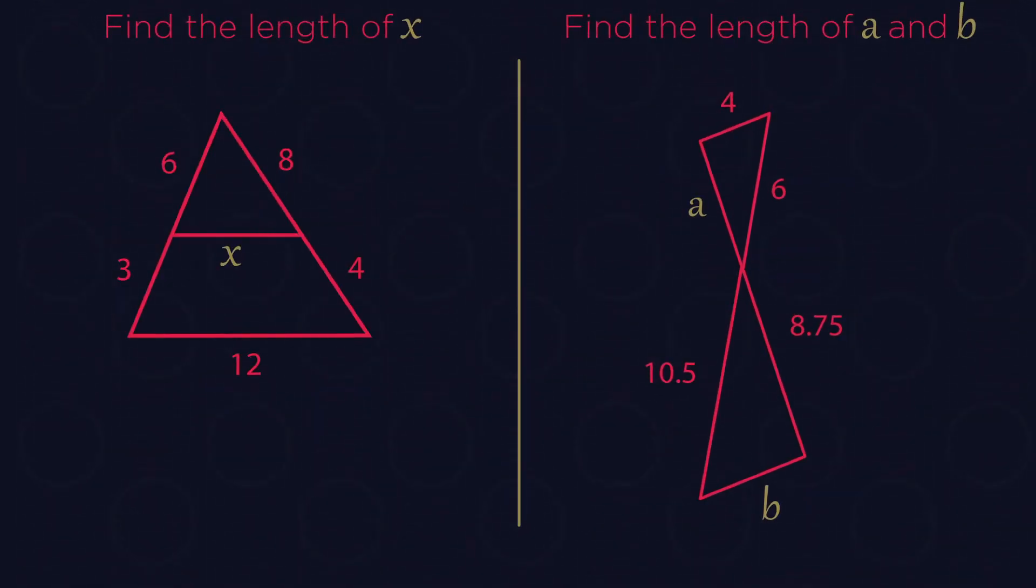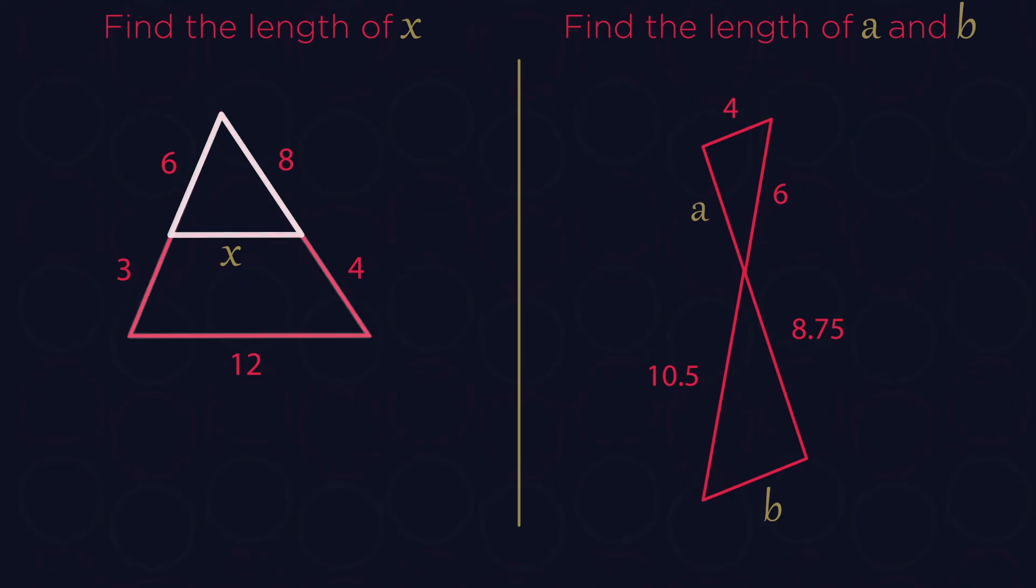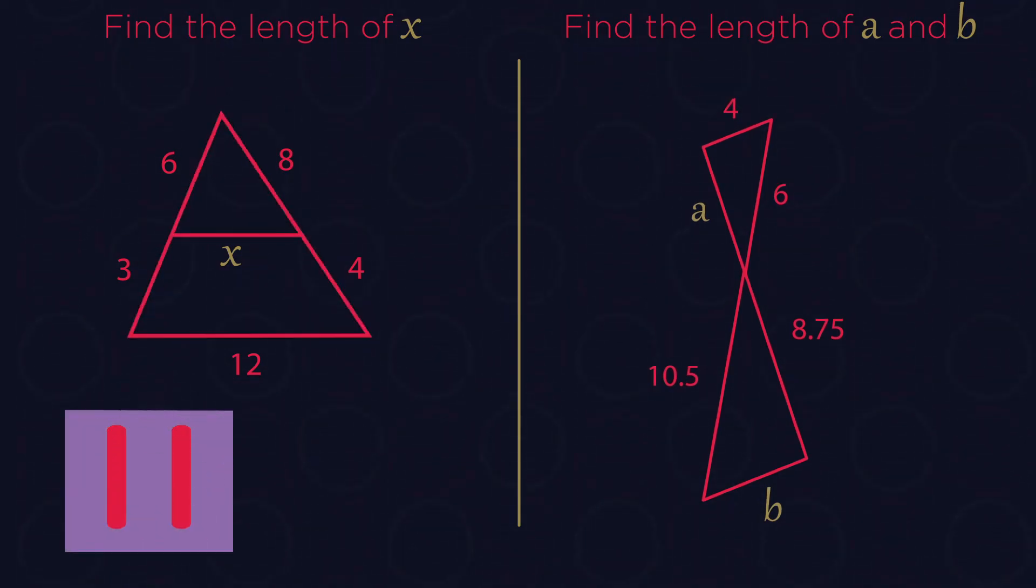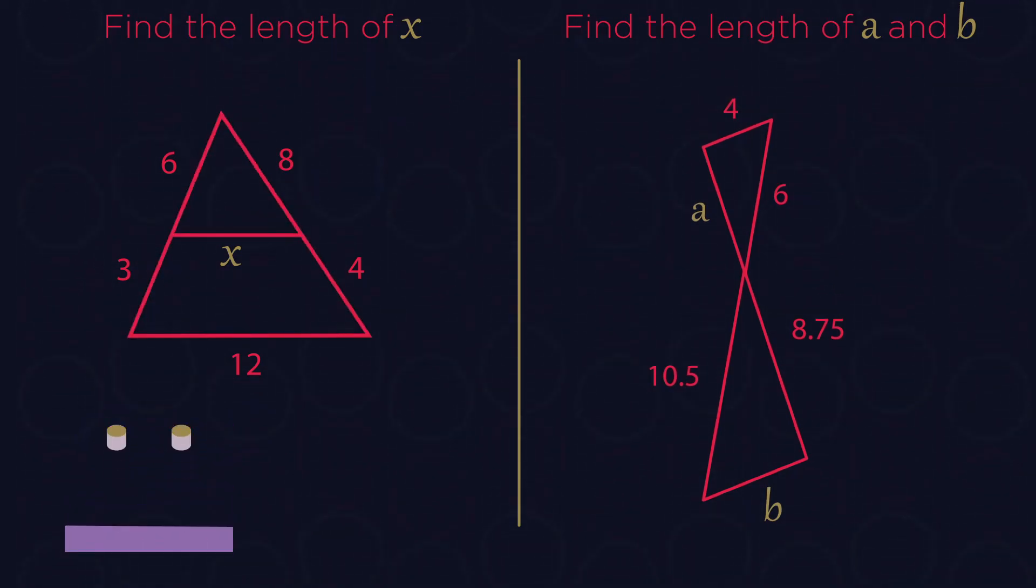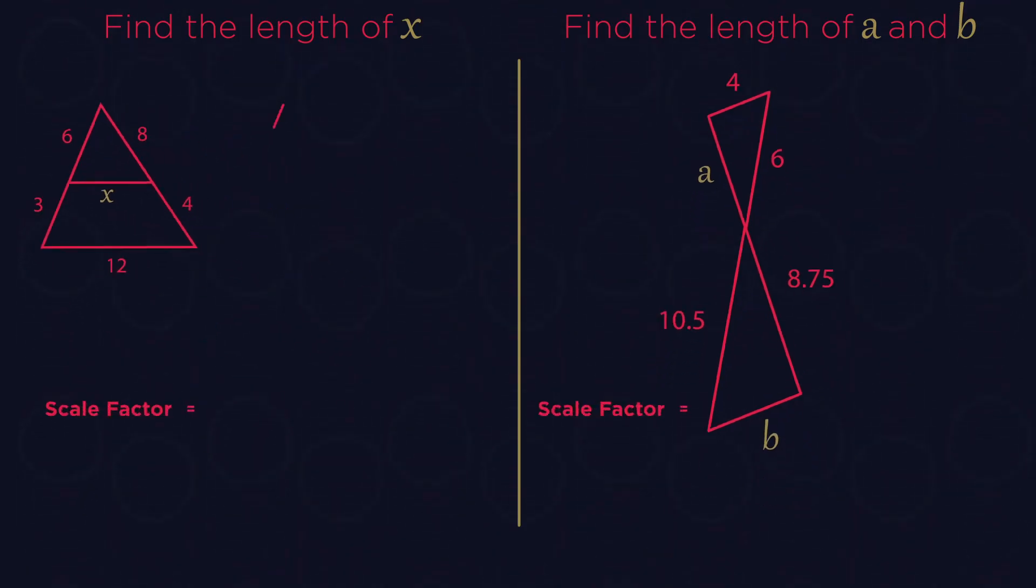Here are two questions for you to do. For the first one, treat them as two separate triangles: a smaller one and a bigger one. Pause the video, work them out, and click play when you're ready. How did you get on?